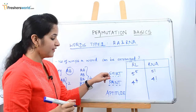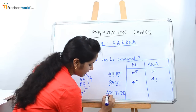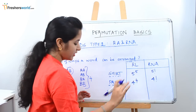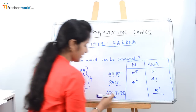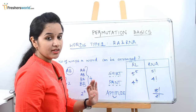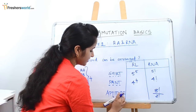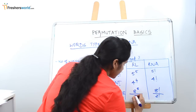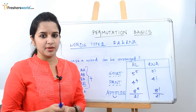Now let's take a repeated letter as an example — the word APTITUDE, where T is repeated twice. In case of repetition not allowed, we count eight letters and divide by the repeated letters: eight factorial divided by two factorial. For repetition allowed, we do the same but use the power format: eight to the power eight divided by two factorial, since T is repeated twice. This is the way repetition allowed and repetition not allowed types of sums work.